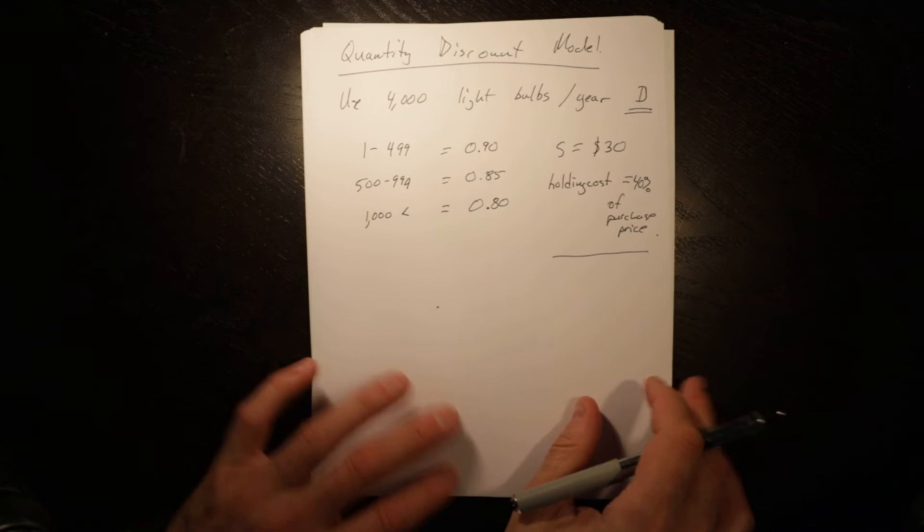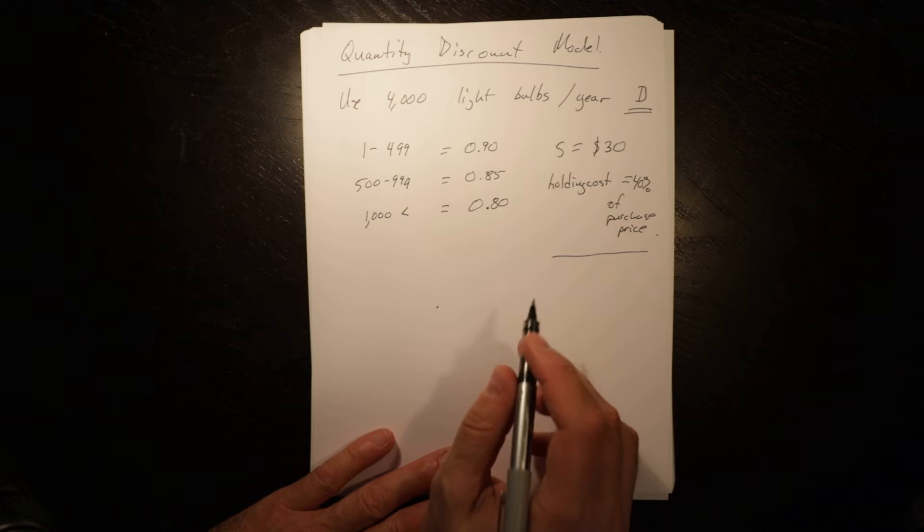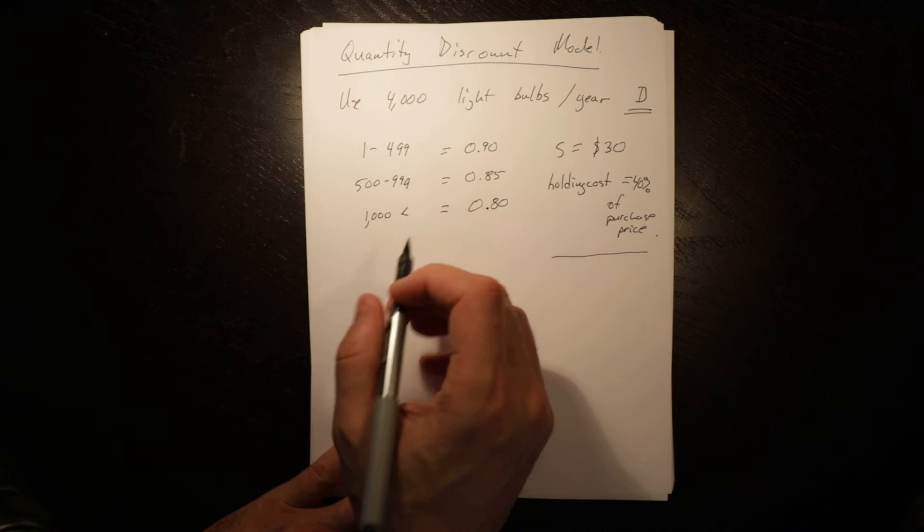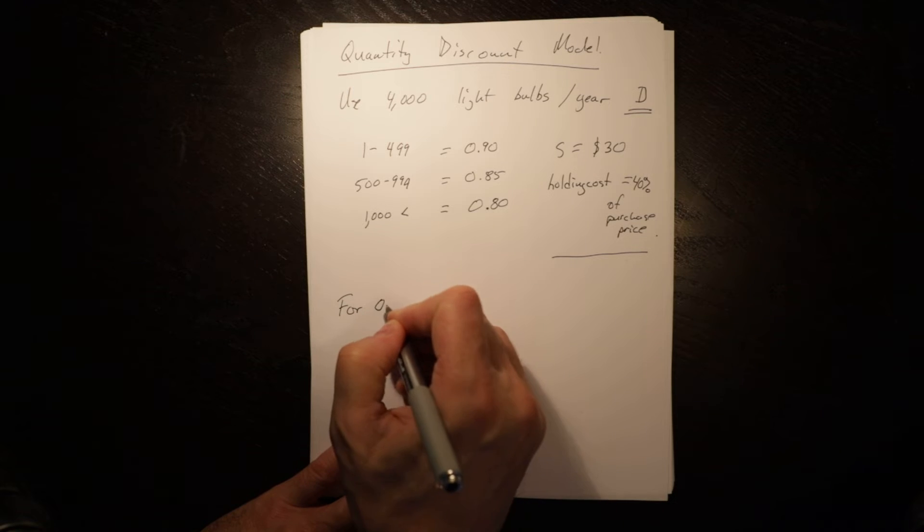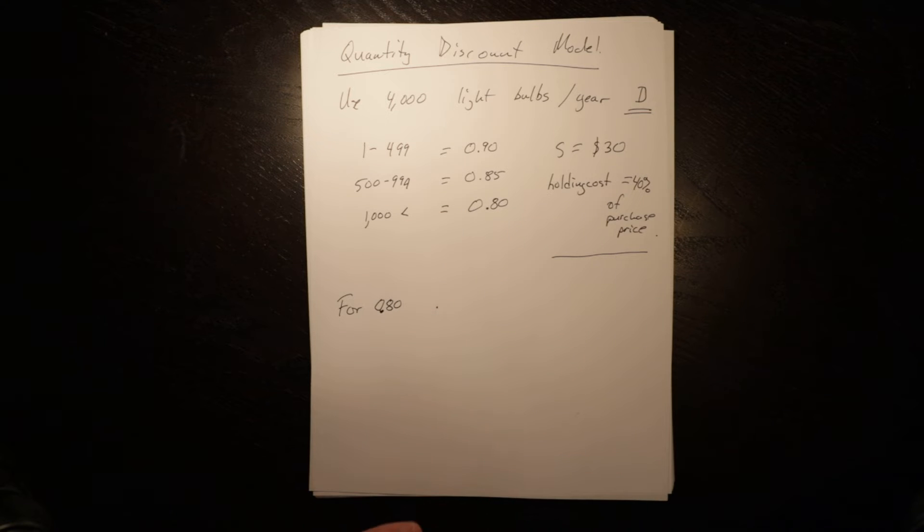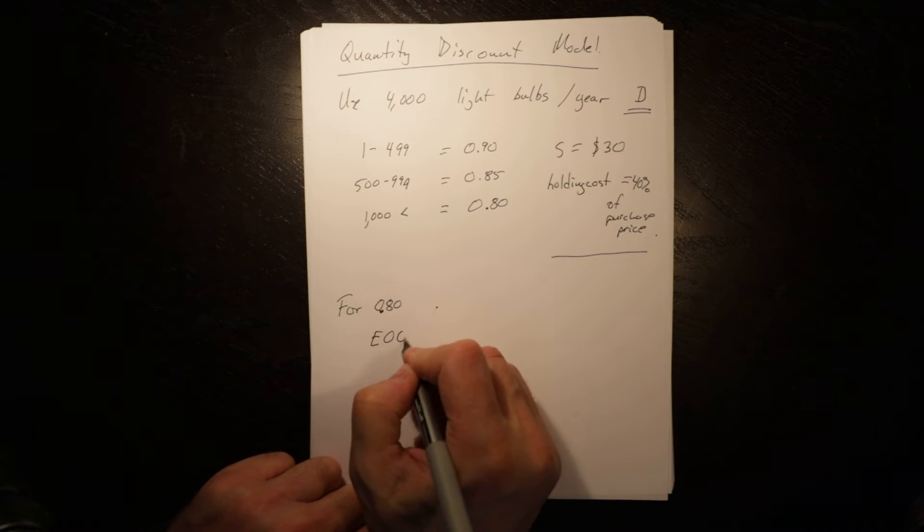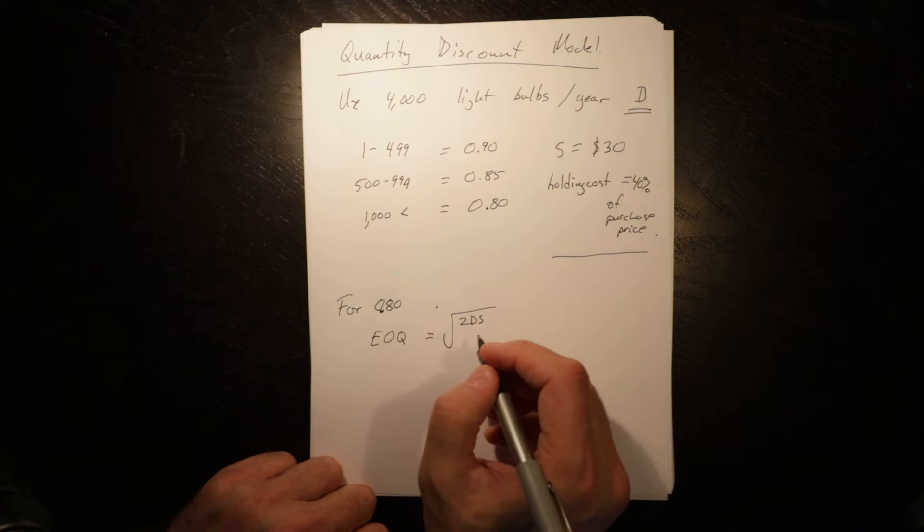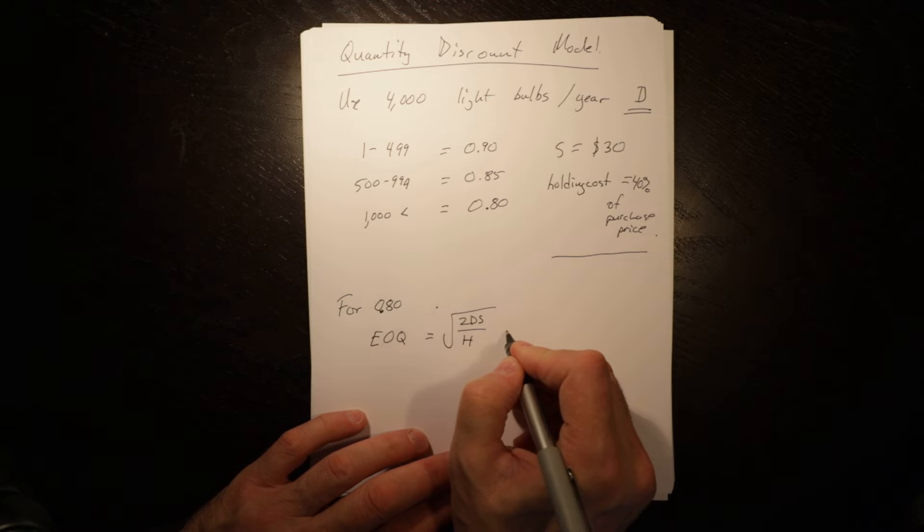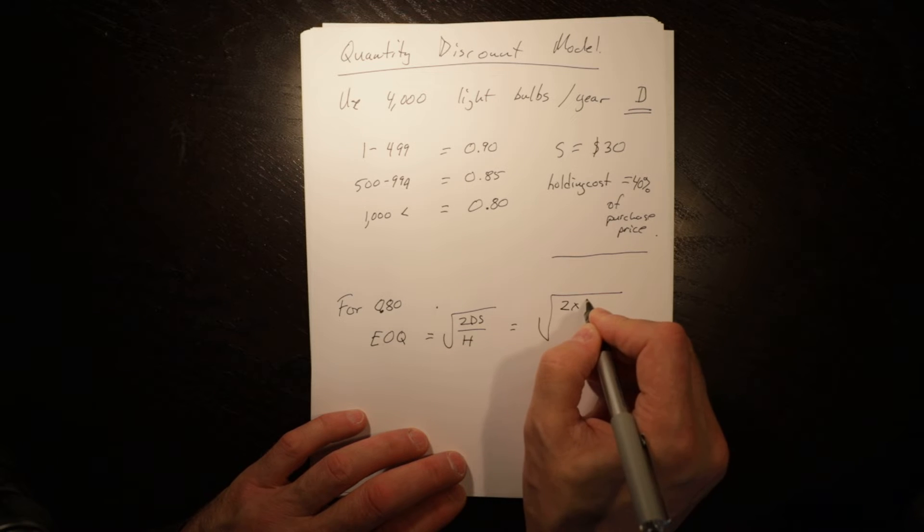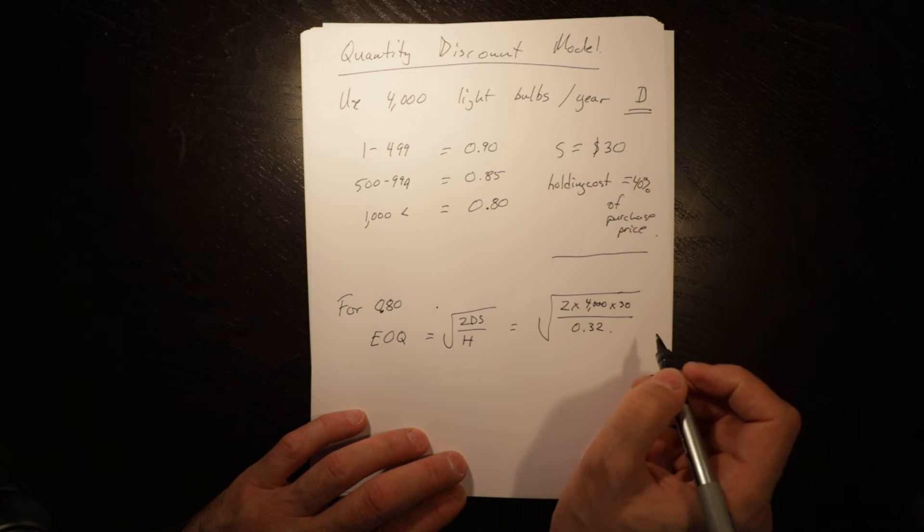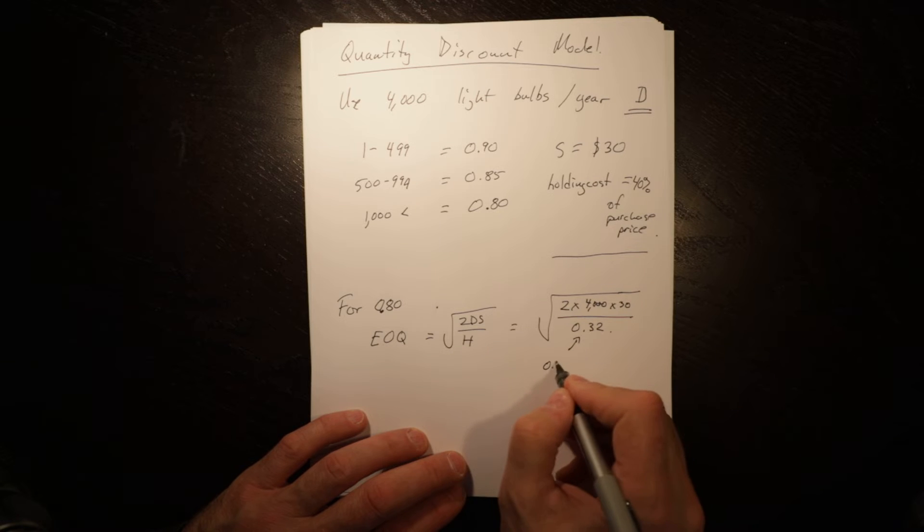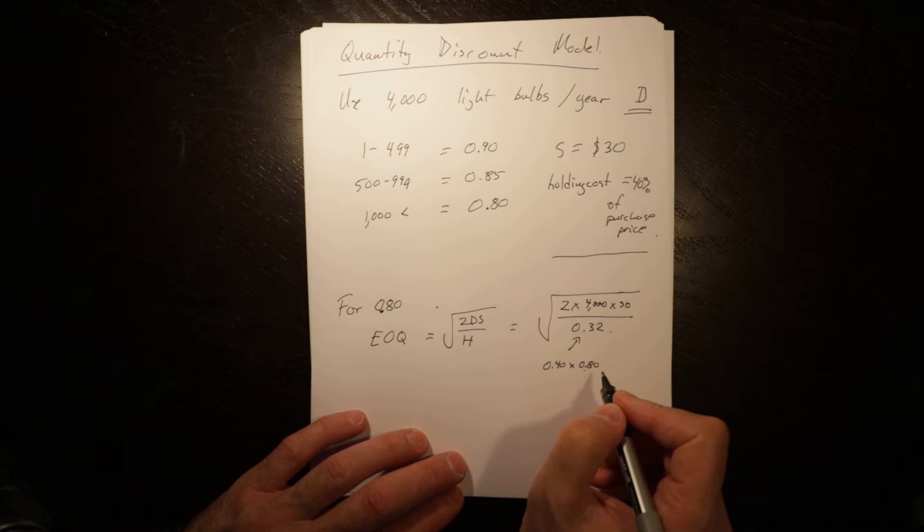The first thing we do is look at 80 cents. I usually start at the high end of the volume. For 80 cents, the EOQ is equal to the square root of 2DS over H, which equals the square root of 2 times 4,000 times 30 divided by 0.32.